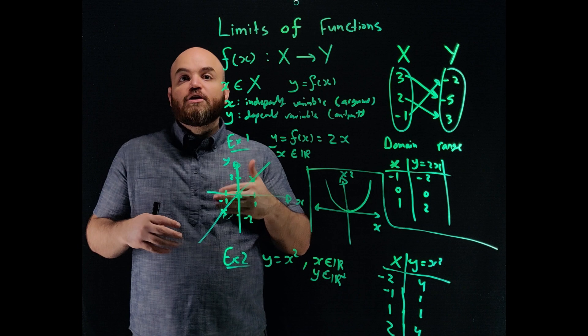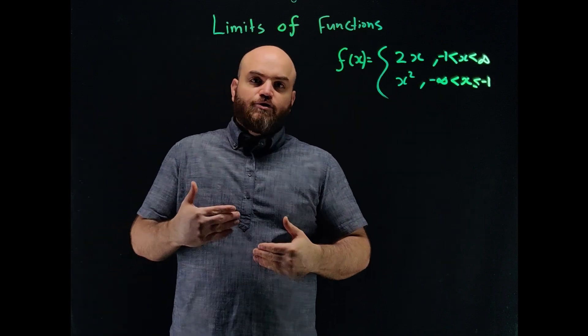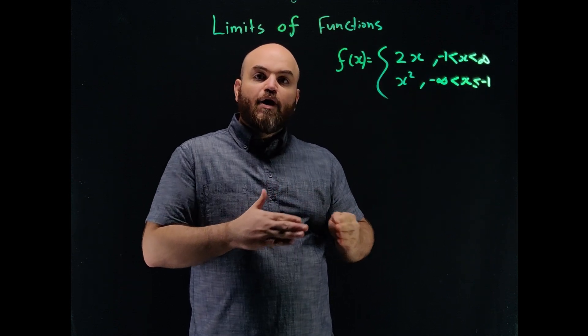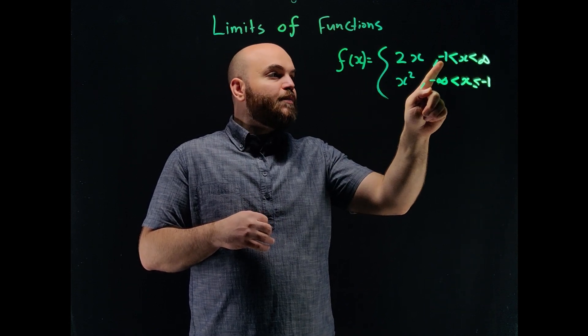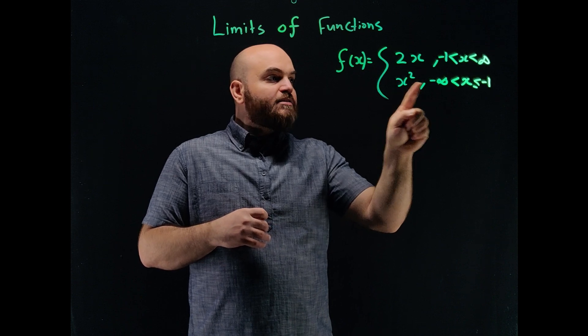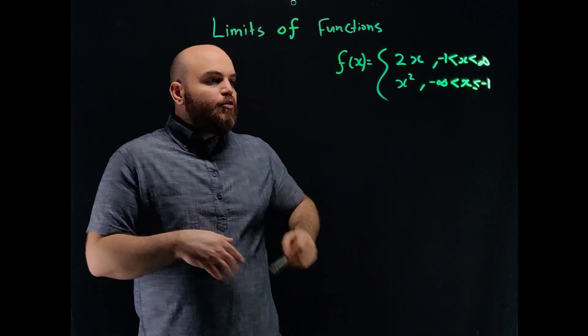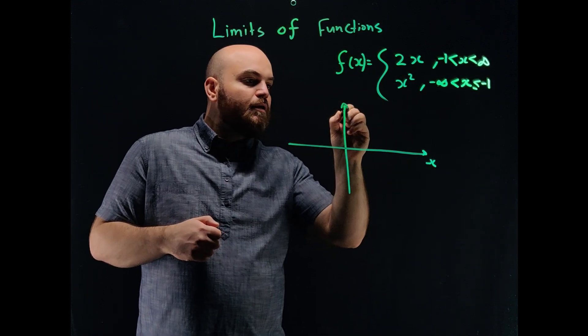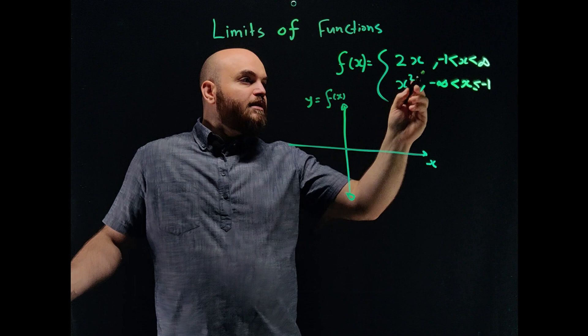Let's take a look at another example function, where the function can be defined in a piecewise definition. Let's look at an example of a piecewise defined function. By that I mean the function has a definition dependent on the range of the variable x that it has. In this case, we have a function f(x) that is equal to 2x when x is between -1 and infinity, and these are open sets. It's also x squared when x is greater than negative infinity and equal to -1.